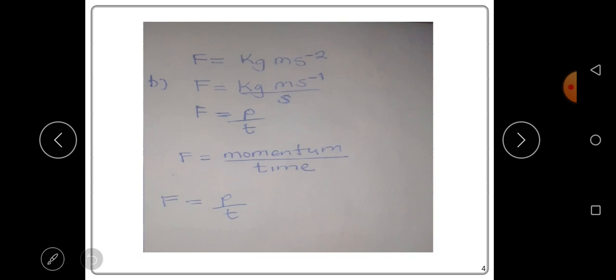So, we can realize that the equation they wanted us to come up with is this one. Force is equal to momentum over time. So, this is the equation written in words. Then, we can conclude. So, this is the answer.